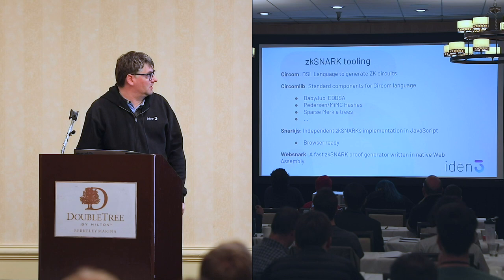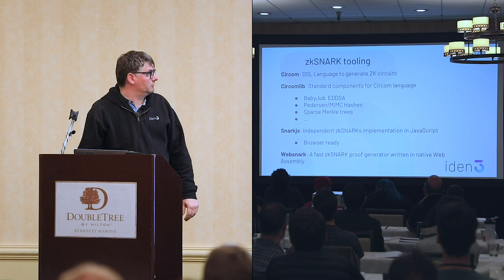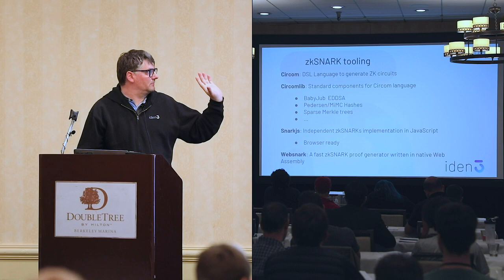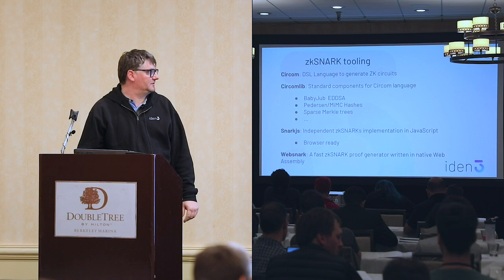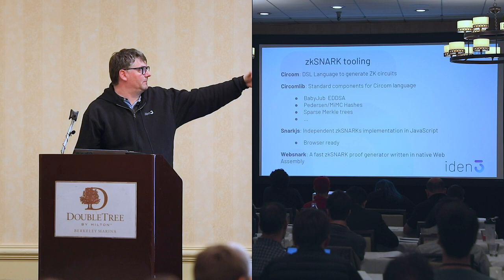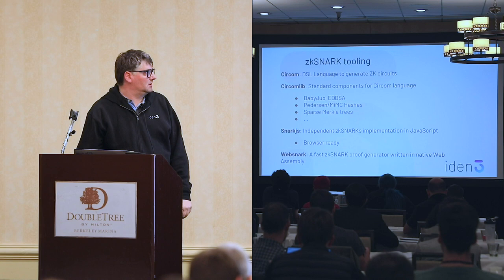Before starting with IDENT3 itself, I want to mention some of the ZKSnark tools we are developing. First is CIRCOM, which is a DSL language for writing circuits. It has nice properties like parametric templates and it works quite well for that purpose. We also have CIRCOMLIB, which is a set of components or gadgets for CIRCOM — including BabyJubJub ECDSA, hash functions, and sparse Merkle tree verifiers, inserts, deletes, and more. CIRCOMLIB has been a good example proving CIRCOM is a solid language for writing circuits.